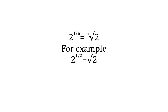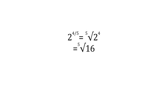To generalize these laws to fractions, we start by defining 2 to the 1 over n to be the nth root of 2. For example, 2 to the half is the square root of 2. Combining this with the other index laws, we can evaluate more complicated expressions. For example, 2 to the 4 over 5 is the fifth root of 2 to the 4, i.e., the fifth root of 16.